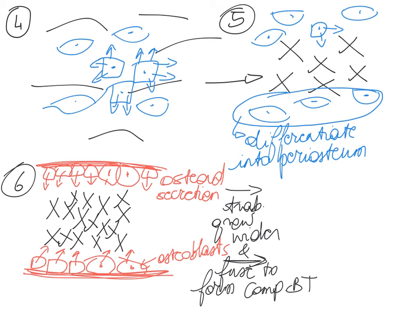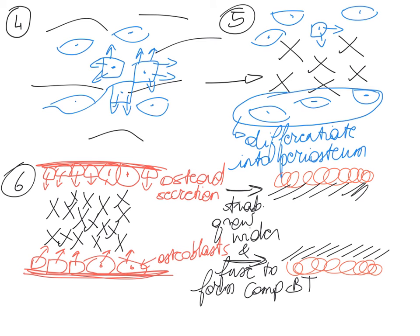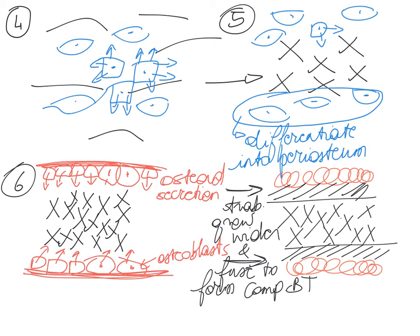This occurs towards the periphery only, not towards the center of our structure. Here is our periosteum, here is our compact bone tissue that is beginning to form by the fusion of the trabeculae, and here we have our trabeculae that have already formed. We often refer to the trabeculae in the ossification center forming this immature spongy bone tissue collectively as woven bone tissue — an immature form of spongy bone tissue.